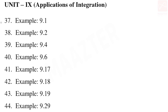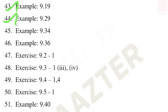Unit 9 three-mark questions: examples 9.1, 9.2, 9.4, 9.6, 9.17, 9.18, 9.19, 9.29, 9.34, 9.36. From exercises: exercise 9.2 — first sum, third and fourth subdivisions.